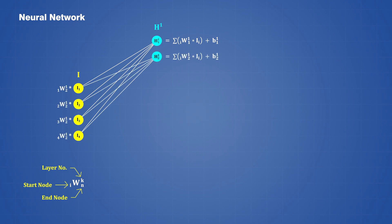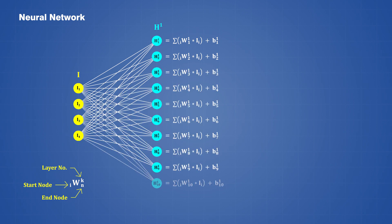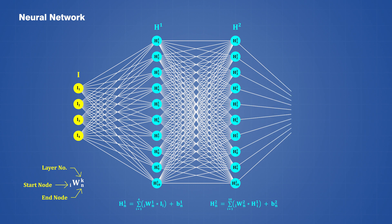We can repeat this for the second node of hidden layer 1 using a different set of weights and biases, and then again for every other node until we have completed the entire layer. The process is exactly the same to get from hidden layer 1 to hidden layer 2, and then from hidden layer 2 to the output layer, with the only difference being the number of nodes and computations.